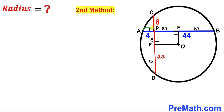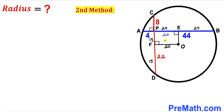Observing the diagram: segment AE is 24 and segment AP is 4, so the remaining segment PE equals 24 minus 4, which is 20 units. Since OF is parallel and equal to PE in this configuration, segment OF is also 20 units.